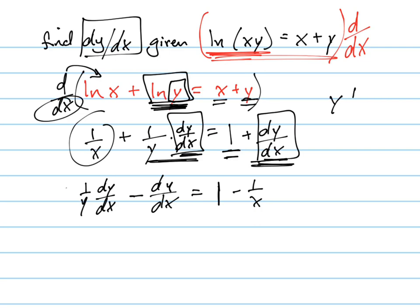Now I can factor out. Remember, I'm trying to solve for dy/dx. That's what they asked, find dy/dx. So I factor that out. So dy/dx times 1 over y minus 1, because remember, there's a 1 there. You've got to hold that place there. Equals 1 minus 1 over x. See how I factor dy/dx? Yeah.